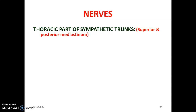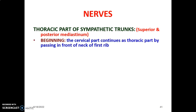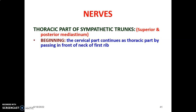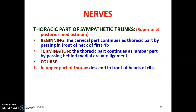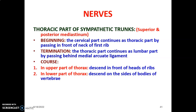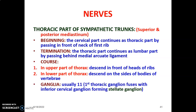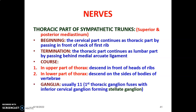Other nerves in the mediastinum include the sympathetic trunks, located in both the superior and posterior mediastinum. These trunks begin at the cervical part and continue as the thoracic part in front of the neck of the first rib, then continue as the lumbar part behind the medial arcuate ligament. In the upper thorax, the sympathetic trunks descend in front of the heads of the ribs; in the lower thorax, they are at the sides of the vertebral bodies. There are usually 11 thoracic ganglia, and the first thoracic ganglion fuses with the inferior cervical ganglion to form the stellate ganglion.